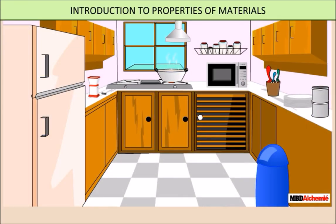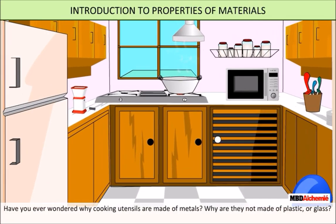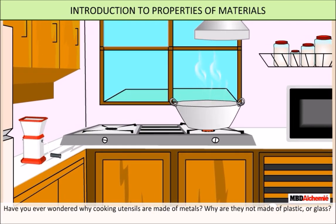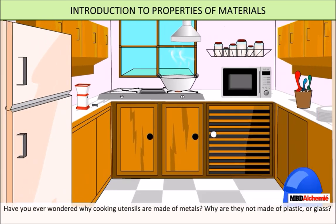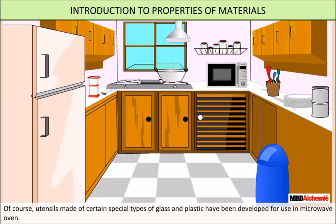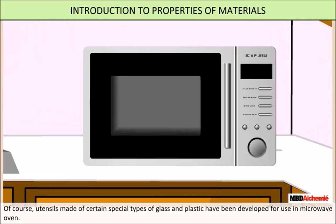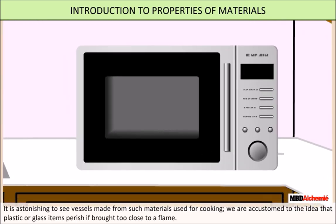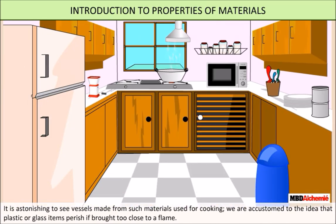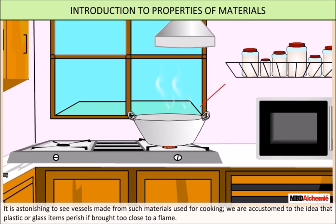Properties of Materials. Have you ever wondered why cooking utensils are made of metals? Why are they not made of plastic or glass? Of course, utensils made of certain special types of glass and plastic have been developed for use in microwave ovens. It is astonishing to see vessels made from such materials used for cooking. We are accustomed to the idea that plastic or glass items perish if brought too close to a flame.